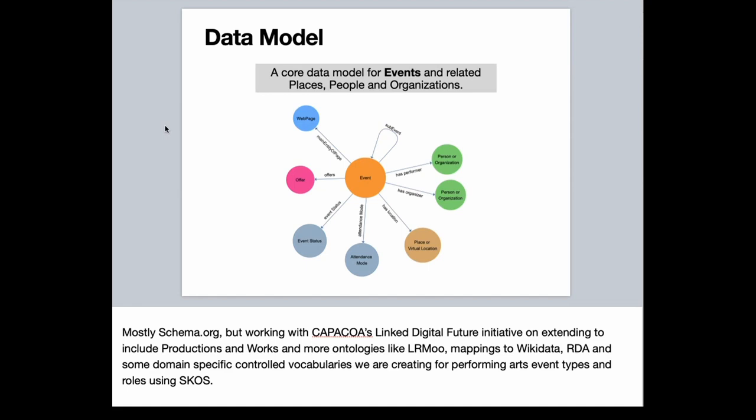The place versus virtual location is really important — that has shifted over the last year. A location can be a physical place, but it also can be a Zoom link or a link to a Facebook Live. So attendance mode is key. The other important fields called out here are event status — has it been rescheduled, has it been cancelled — and attendance mode, which can be online, offline, or mixed. Those are really hard bits of information to get from a web page. Part of the tools like Footlight help a person whose main goal is to display the information on a website to be able to review those information pieces so that they're accurate before they get converted to RDF.